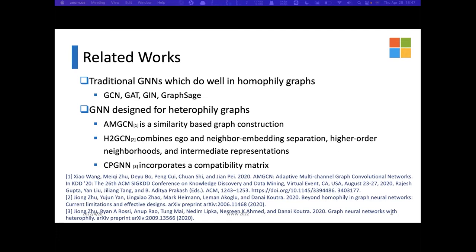CPGNN incorporates a compatibility metric that captures both heterophily and homophily and models the likelihood of the connection between nodes in different classes.